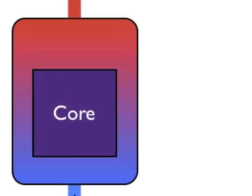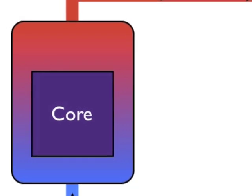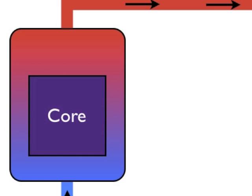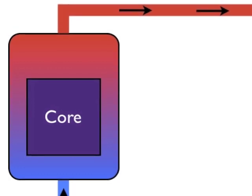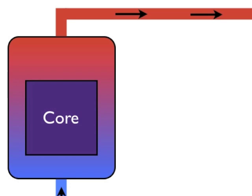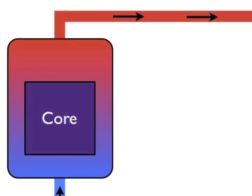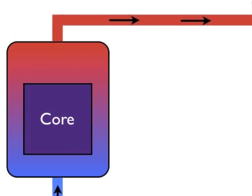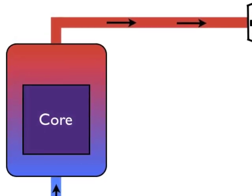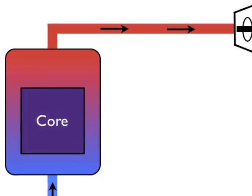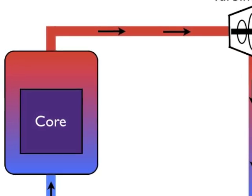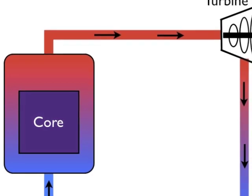Nuclear reactors take advantage of this fact by putting atoms that fission easily together in a structure called a core. So you have all these atoms fissioning, which means the core gets really hot. When you send coolant through or around the core, the heat transfers to the coolant. The coolant then carries the heat to a turbine and turns the blades of the turbine to produce electricity. For example, most reactors use water as a coolant, and as the water moves through the core, it changes from liquid to steam, and the steam turns the turbine fans.